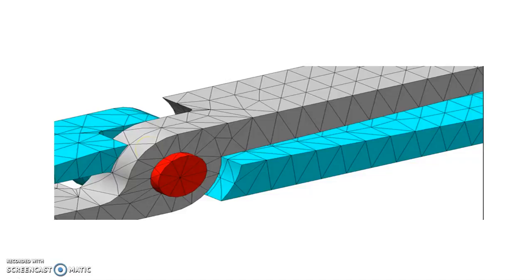The second step is assumption of a trial displacement function and the displacement function should satisfy all the necessary boundary condition.